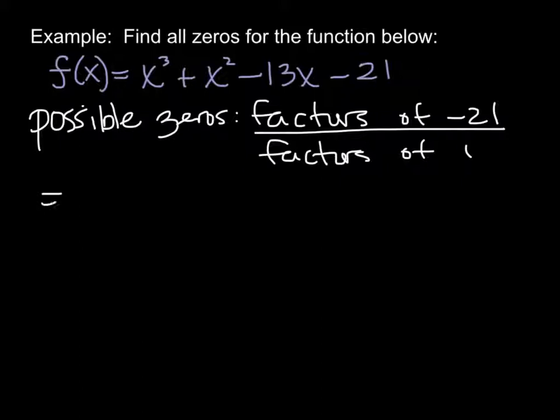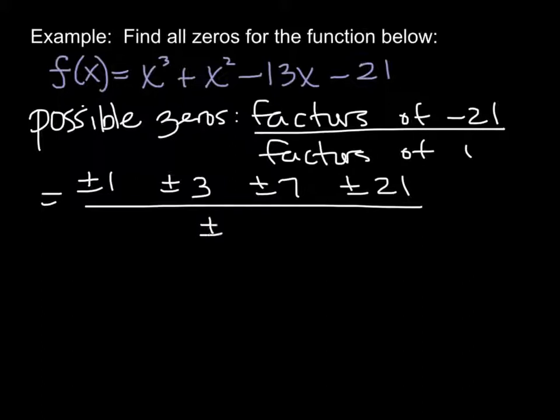So in this case my possible rational zeros would be factors of 21, well it could be plus or minus 1 goes into there, plus or minus 3 factors into 21, plus or minus 7, or plus or minus 21. Those are all factors of 21. On the bottom this is a nice kind of easy one because I just have a 1 as my leading term. So the only thing there is plus or minus 1.